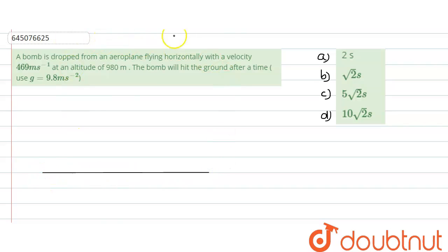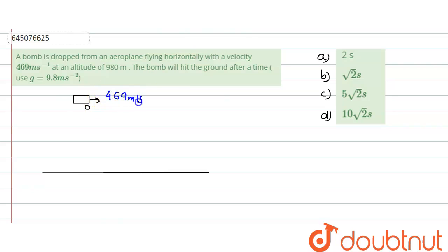There is an aeroplane which is flying, and there is a bomb which has been dropped. The aeroplane has some velocity, so the bomb would have the same velocity of 469 meter per second. The height given is from the aeroplane to the ground, which is 980 meters. The path of the bomb would be a projectile.